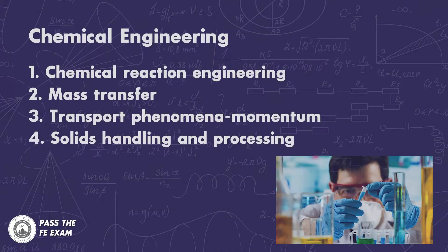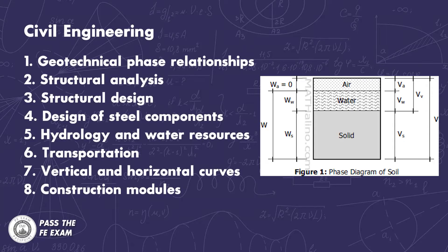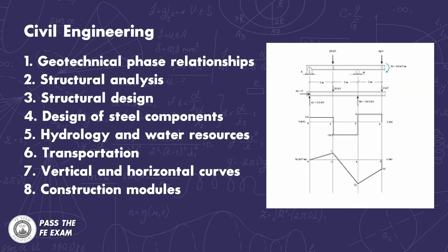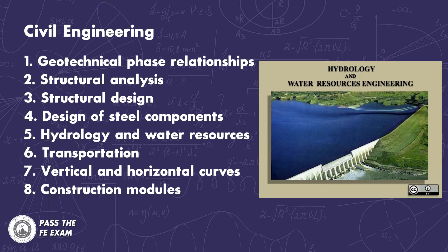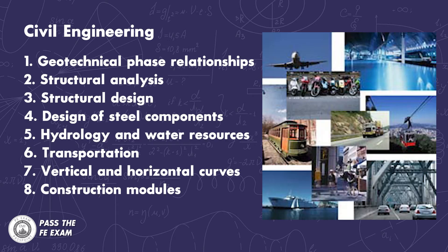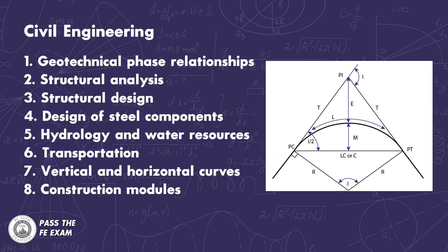Number fifteen, the chemical engineering section, where you can learn about chemical reaction engineering, mass transfer, and transport phenomena momentum, as well as solids handling and processing. Number sixteen, the civil engineering section, which is very intense and covers geotechnical phase relationships, structural analysis, structural design, the design of steel components, hydrology and water resources, transportation, vertical and horizontal curves, and construction modules — that sounds like multiple engineering degrees in one section of the handbook.